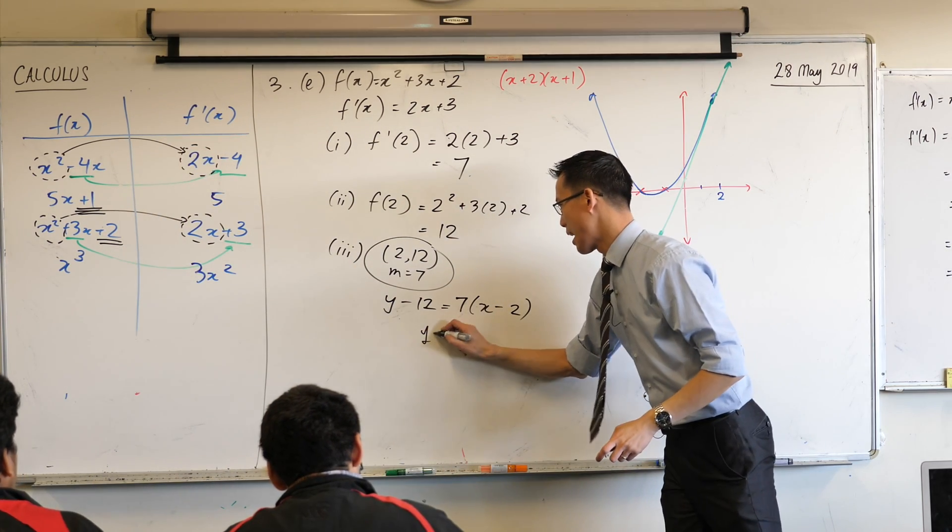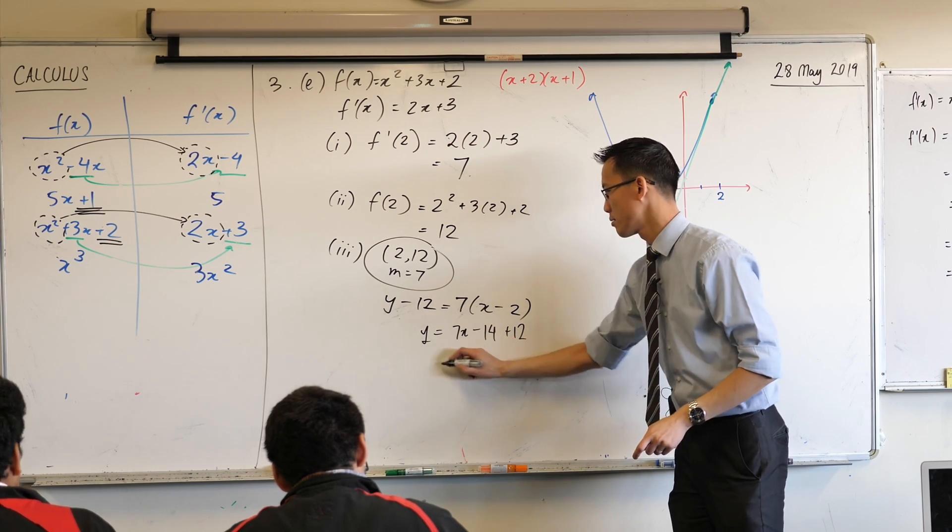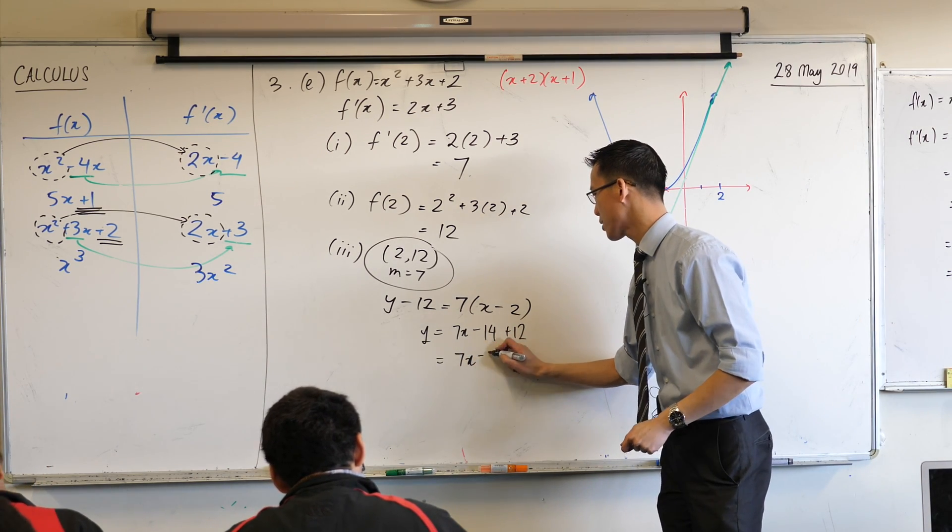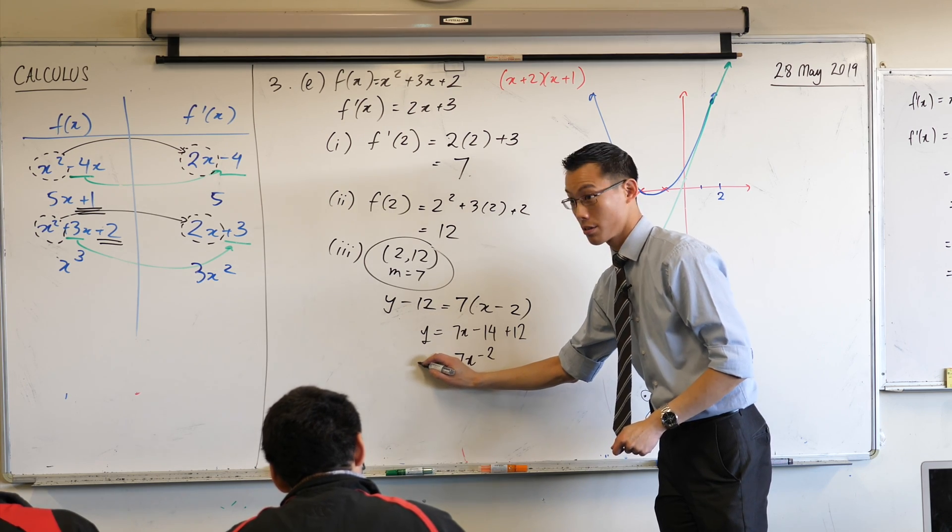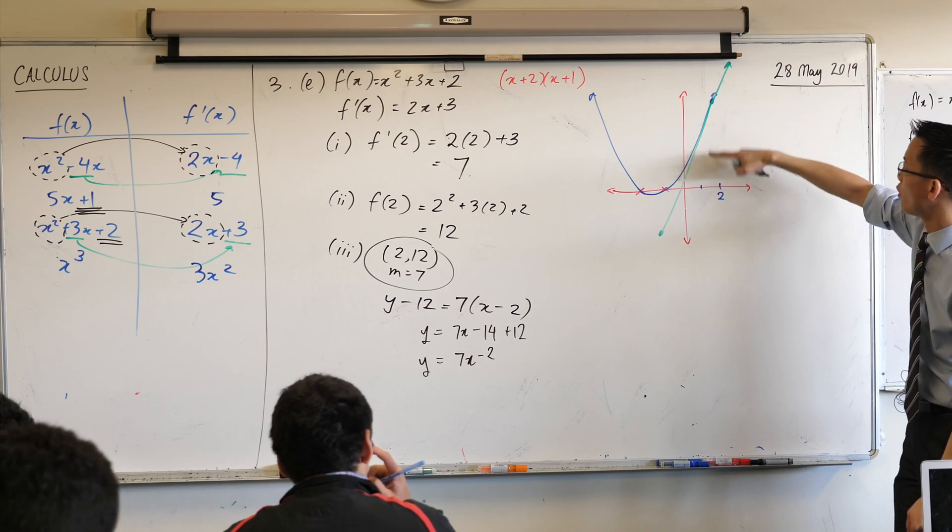I'm going to add 12 to both sides and expand this. What am I going to get down the end? 7x minus... 7x minus... No, no, no. Minus. Minus 2.